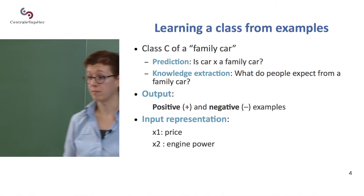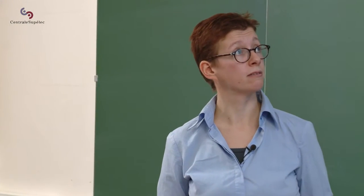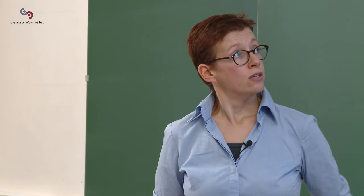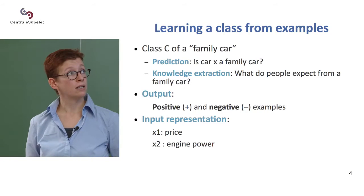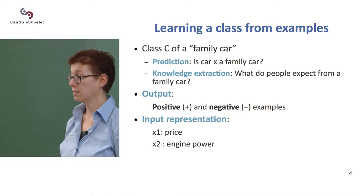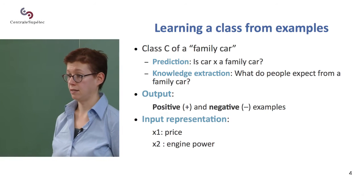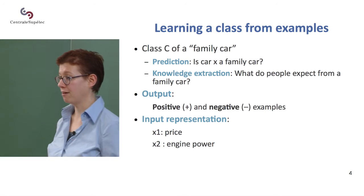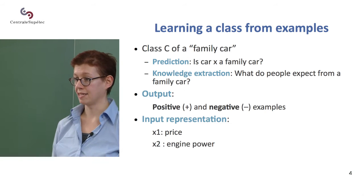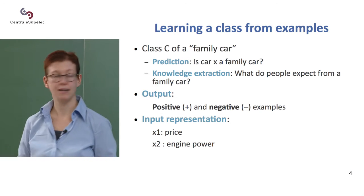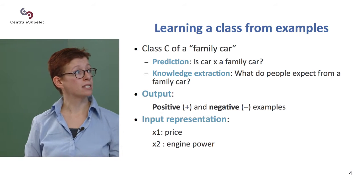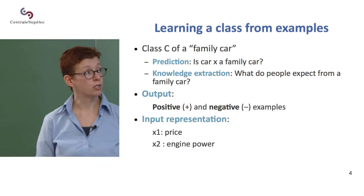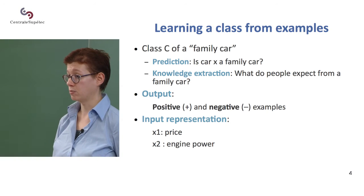The goal is to learn a class from examples. Here's a simple example — it's going to be in 2D because I only have two dimensions on the board. We want to be able to predict, given a car, whether it is a family car — not a sports car and not a poor student's car. The kind of car you use to go on trips with your family during the holidays with two children and a dog in the back. So the input is going to be a representation of the car — a very simple two-dimensional representation with one variable which is price and the second variable which is the power of the car.